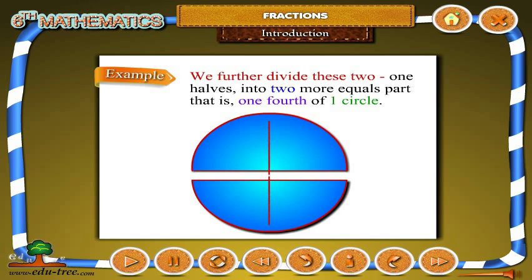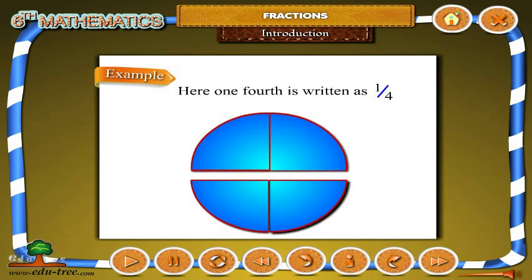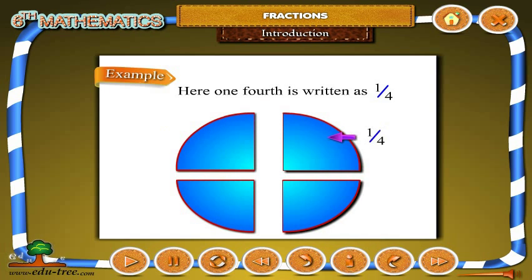We further divide these two one halves into two more equal parts, that is, one fourth of one circle. Here, one fourth is written as one by four.